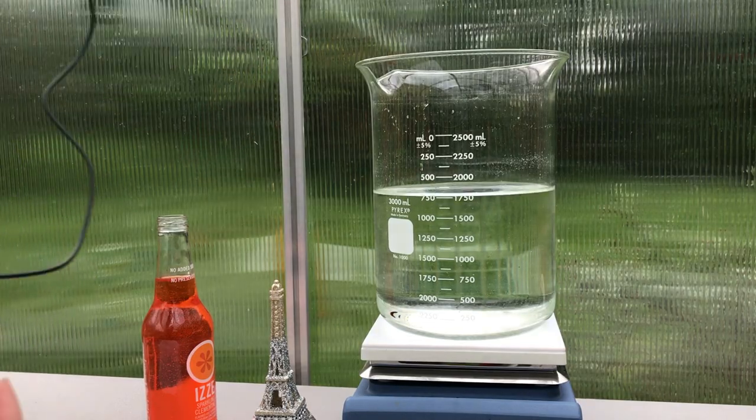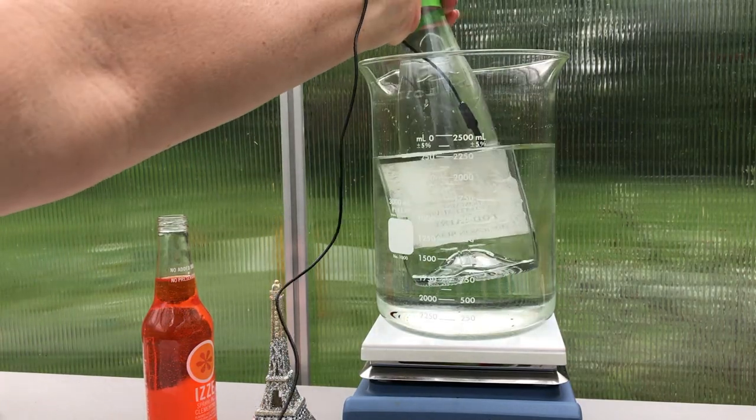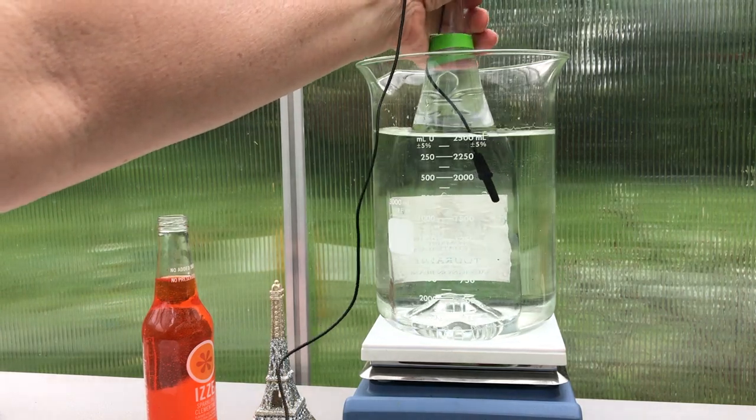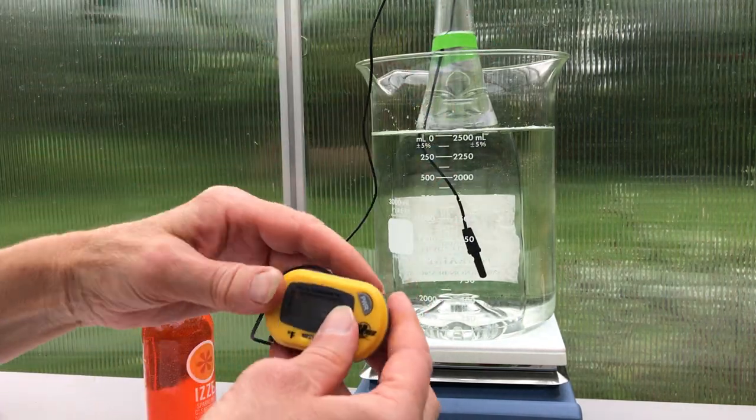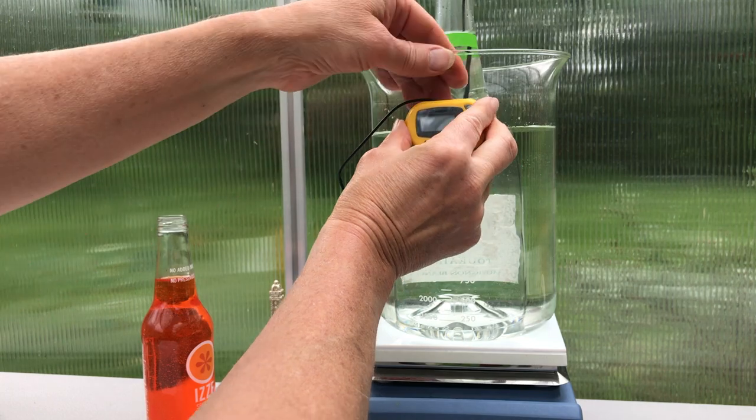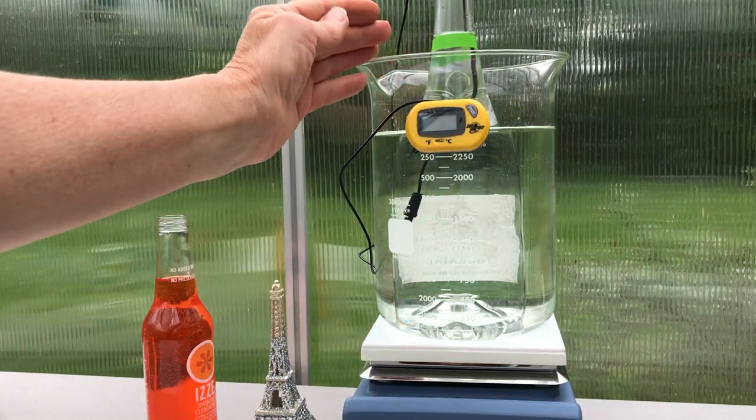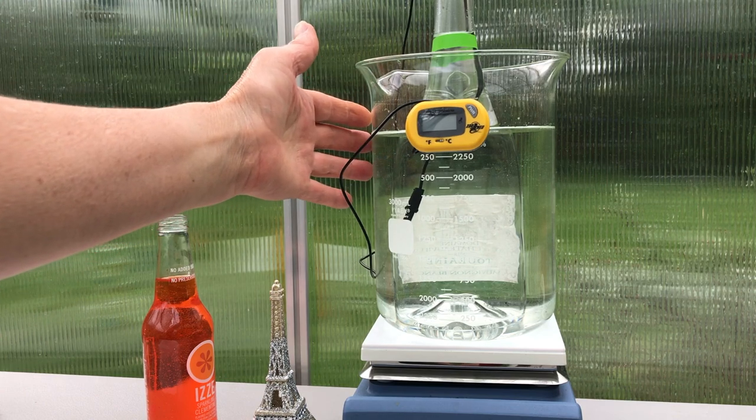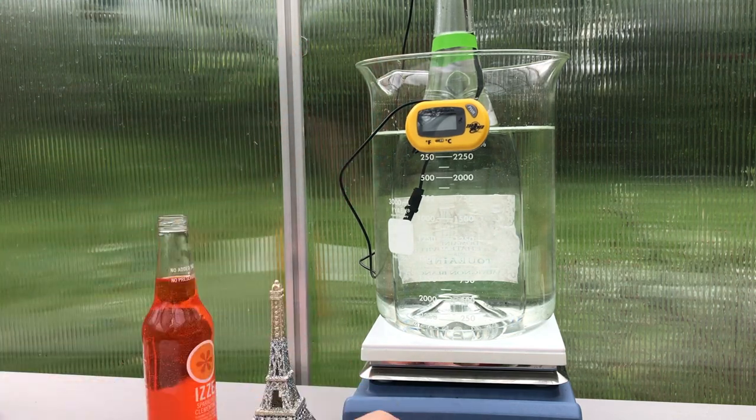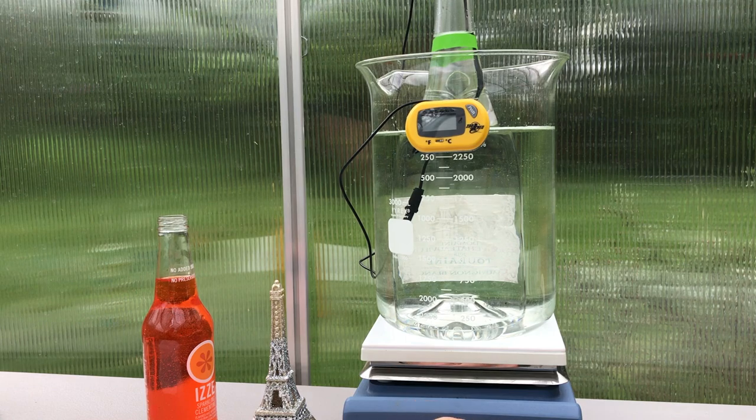We're going to put this into a beaker on a hot plate. A pot on a stove would work too. And I'm going to set my thermometer here so we can watch it warm up. This prevents the bottle from breaking when we set it on the burner to heat up. We want to take it to about 50 degrees warmer than it is now.